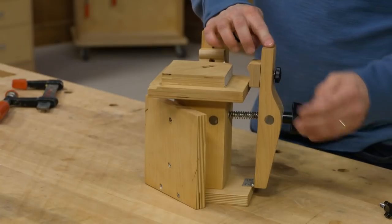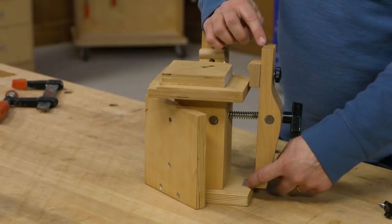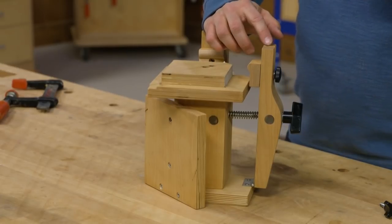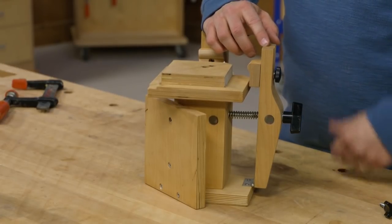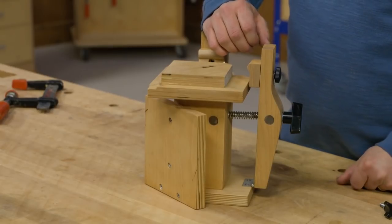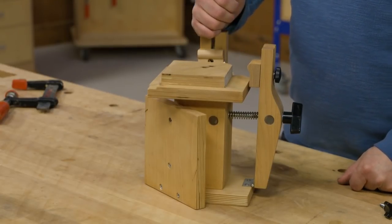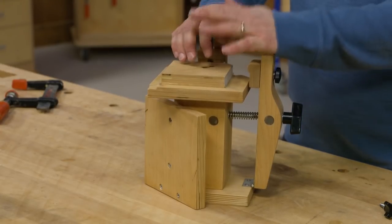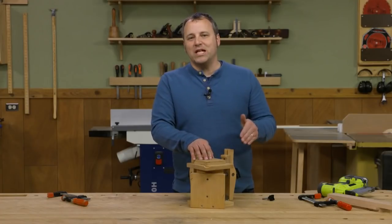These arms are attached to the base with just regular small butt hinges, so the hardware here is not complicated. You can find a lot of it at just your regular hardware store. Heck, you might even have it in the coffee can on the shelf in your shop already.